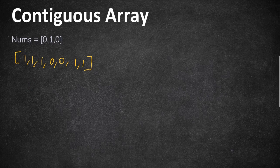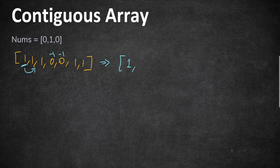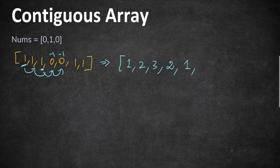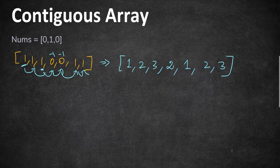Let's walk through this. Converting zeros to minus-one and computing running sums: starting with the first value being 1, the sum is 1; adding the next gives 2; then 3; then a minus-one reduces it to 2; another minus-one reduces to 1; adding one gives 2 again; adding one gives 3. We look for zero in these sums, but here we won't find a zero because we're computing prefix sums of the whole array, not individual subarray sums.